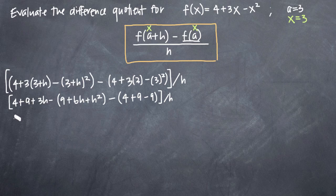If we continue simplifying, in our numerator here, we'll get 4 + 9 + 3h. If we distribute this negative sign, we get -9 - 6h - h². Distribute this negative sign across the 4, 9, and -9, we'll get -4 - 9 + 9. All of this divided by h.